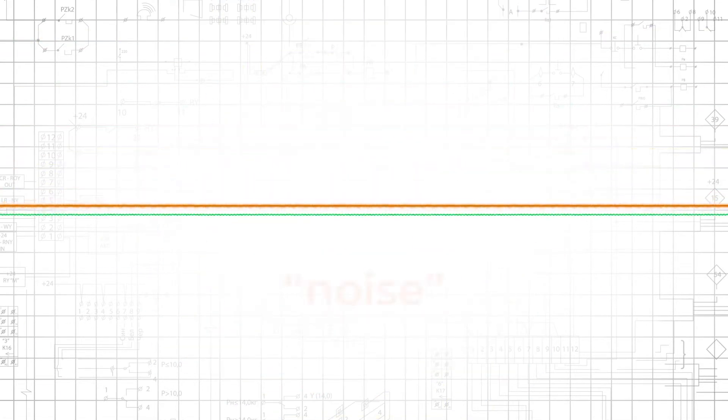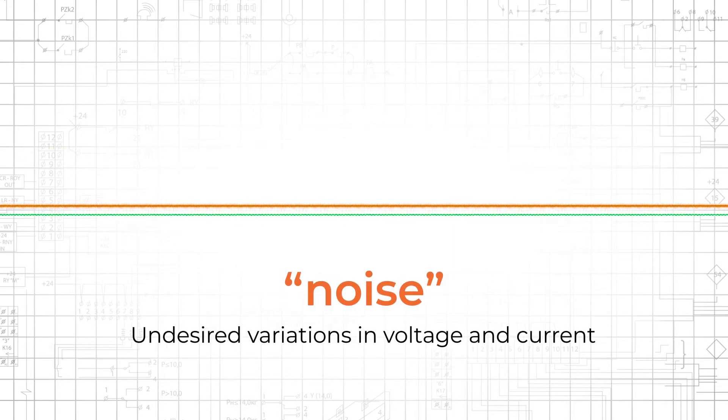We use the word noise to identify undesired and usually small variations in voltage and current. All signals contain noise because it is generated by inescapable physical processes.